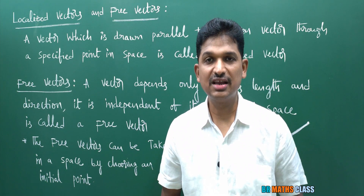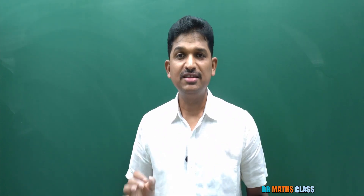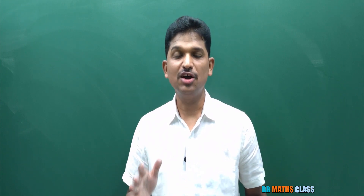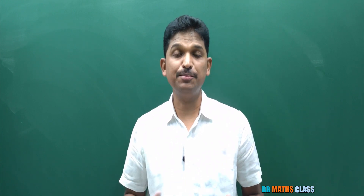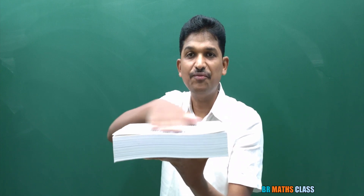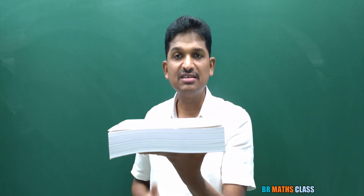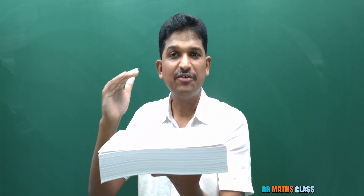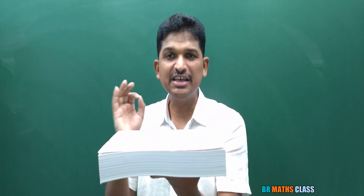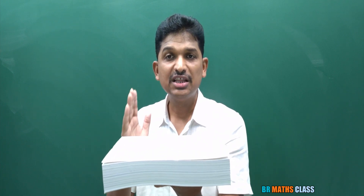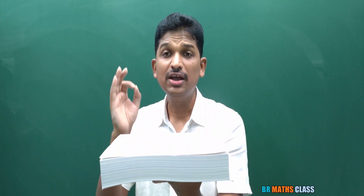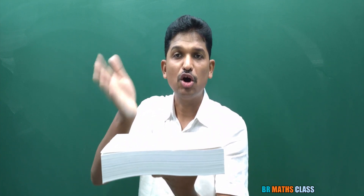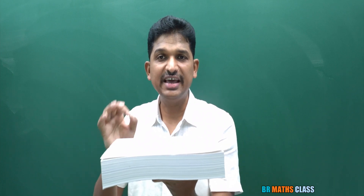Now the last definition in this class: coplanar vectors. Vectors which lie on a same plane are called coplanar vectors. A flat surface is called a plane. The vectors which lie on a same plane are called coplanar vectors. Suppose I take three vectors A bar, B bar, C bar — if they lie on the same plane, they are coplanar vectors.